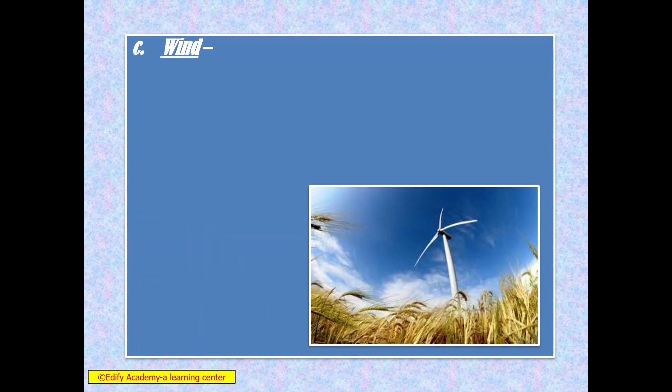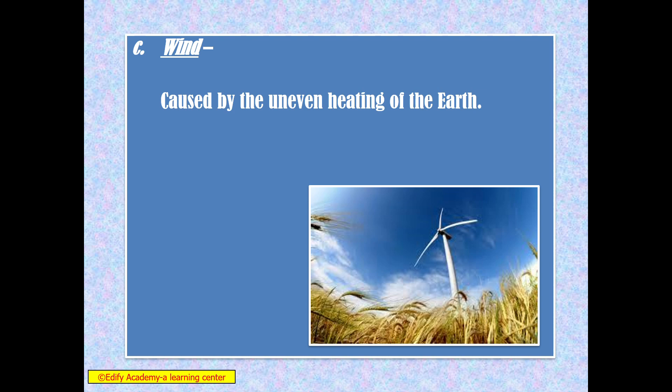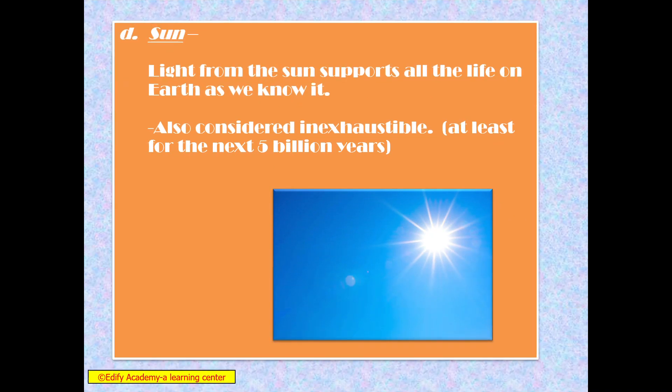Next is wind energy. Wind is caused by the uneven heating of the earth, and it is not only renewable but also inexhaustible. Next is sun or solar energy. Light from the sun supports all life on earth as we know it. Also considered inexhaustible — we call it inexhaustible because it is categorized as a renewable energy resource, at least for the next five billion years, as the sun also has a life.